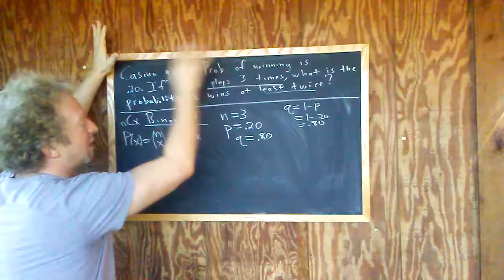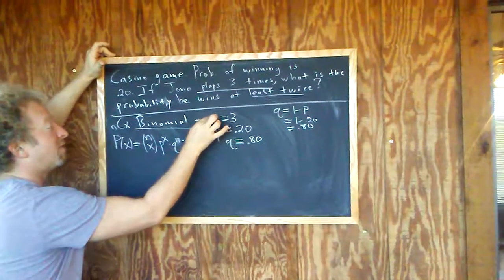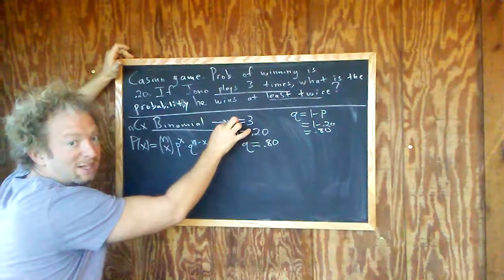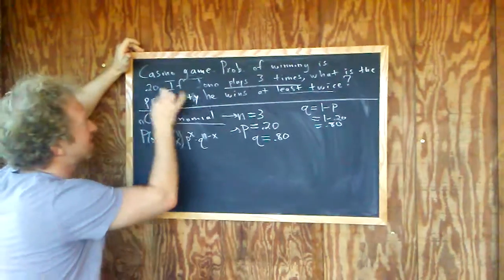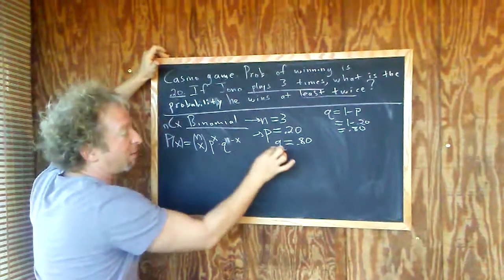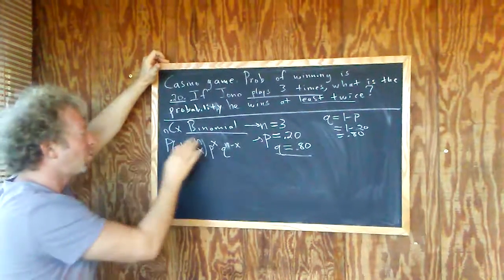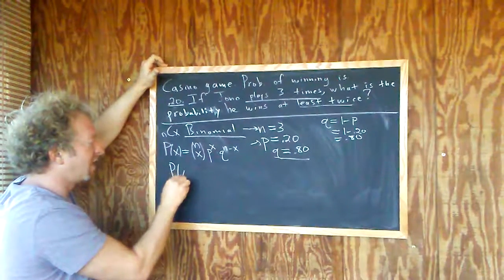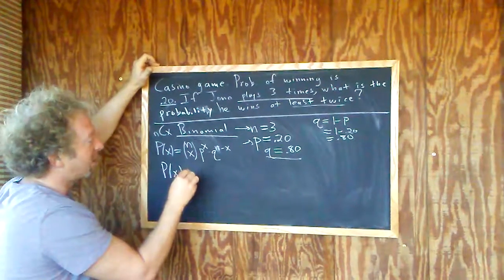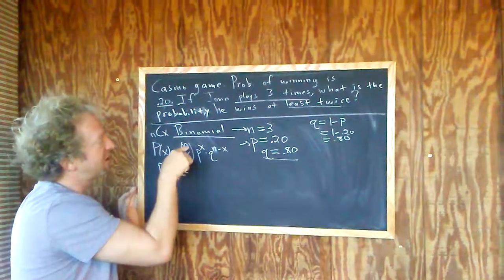So you read the problem. You have two possible outcomes. You write down the number of trials. In other words, how many times he plays the game. The probability of success. That's the probability of winning. The probability of losing. And then you write down everything, plug everything into your formula. So N here, well, what's X? We don't know what X is. So N here is three.